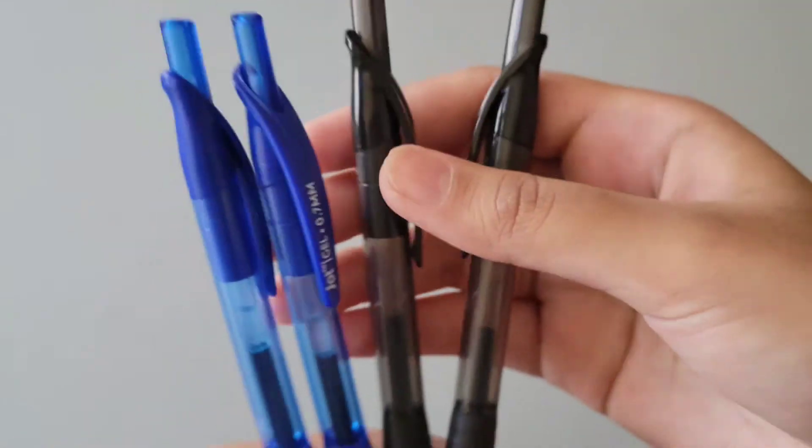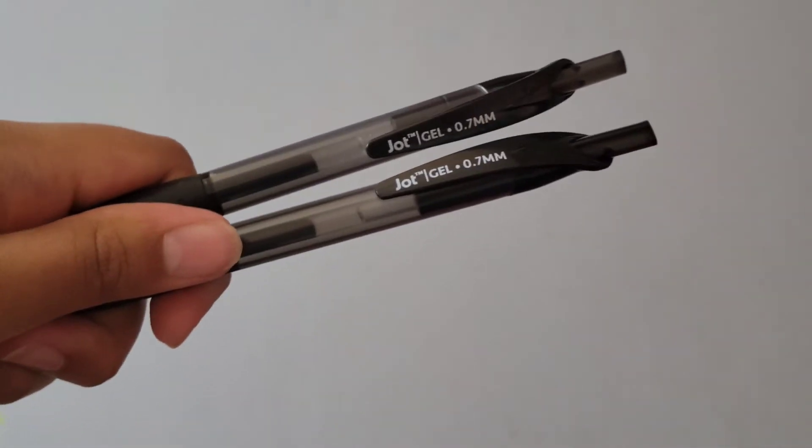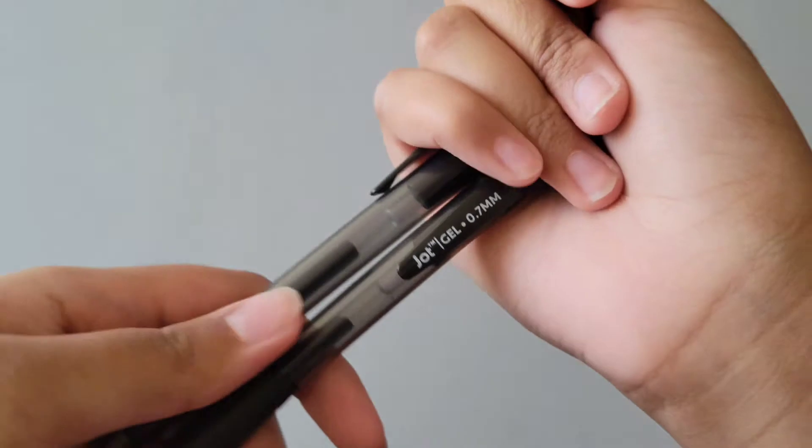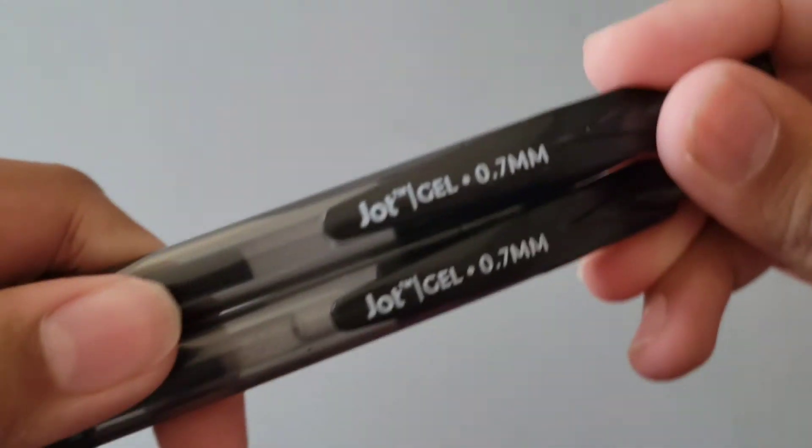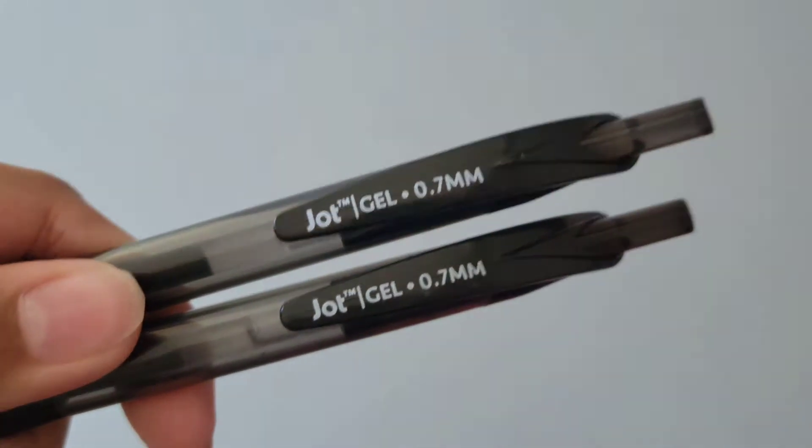There are two black and two blue pens. They have a grip as well, as you guys can see. That is how the pens look like. Here are the two black pens that come with it. It is from Jot-TM, and they are gel pens with 0.7 mm.